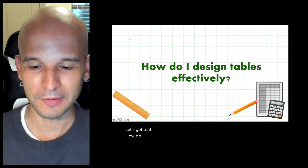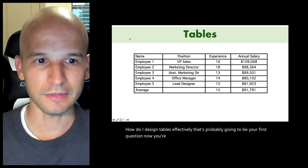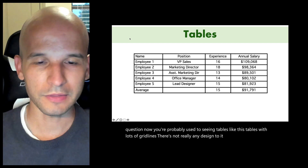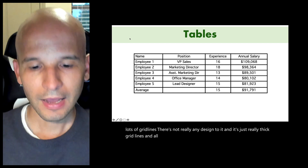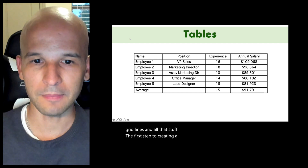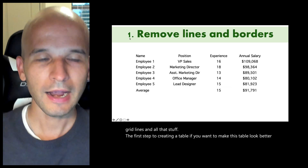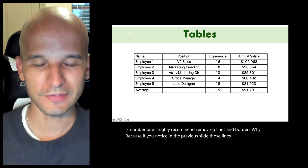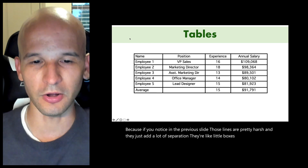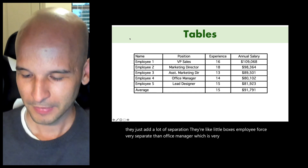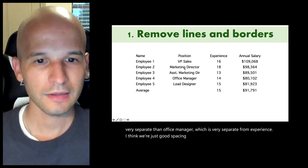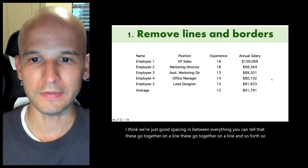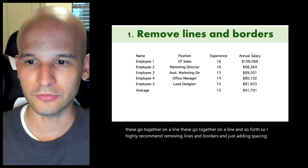How do I design tables effectively? You're probably used to seeing tables with lots of grid lines — thick grid lines with no real design to them. The first step is to remove lines and borders. Those lines are pretty harsh and add a lot of separation. With just good spacing between everything, you can tell that items go together on a line without needing those borders. I highly recommend removing lines and borders and just adding spacing — everything will line up just fine.